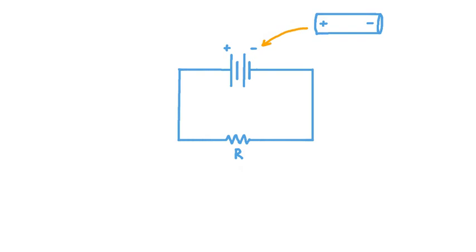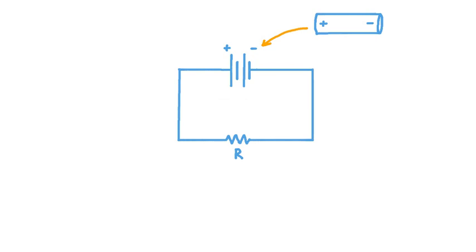The term battery sometimes indicates a single cell in a circuit, or it can indicate multiple cells strung end to end. For our purposes in this video, we'll consider a battery to be a single unit, a single cell. A battery is a device that converts stored chemical energy into electrical energy.